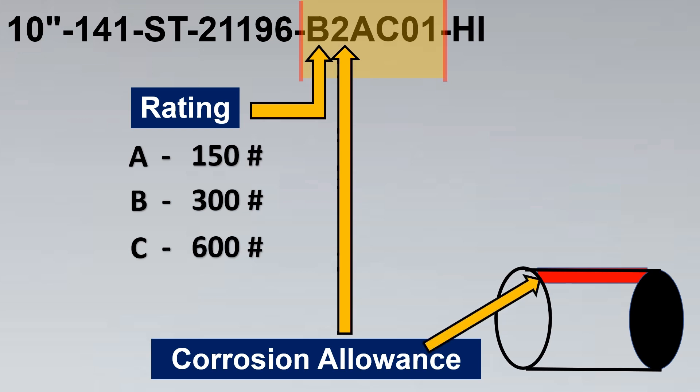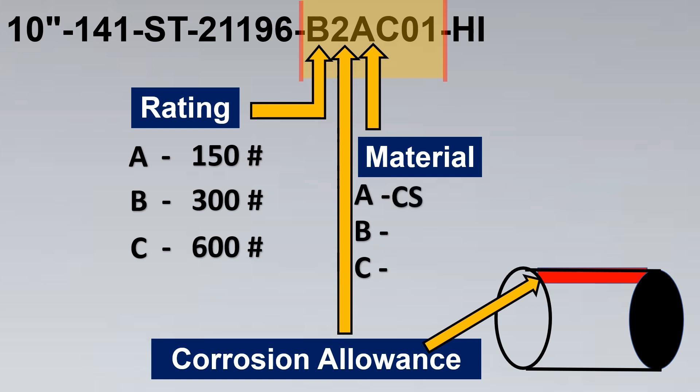The next one here after we complete the corrosion allowance part is the material selection. So what is the material of the pipe is also mentioned here. For example A might stand for carbon steel. B might stand for SS304. C might stand for stainless steel 316 etc. So we can get to know the material of the pipe as well.